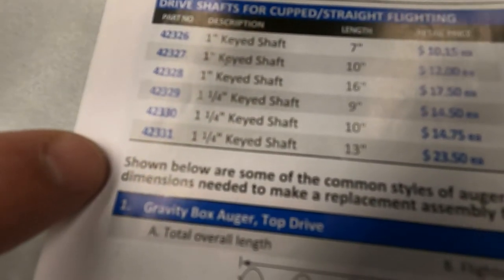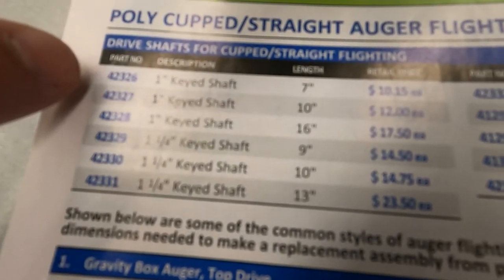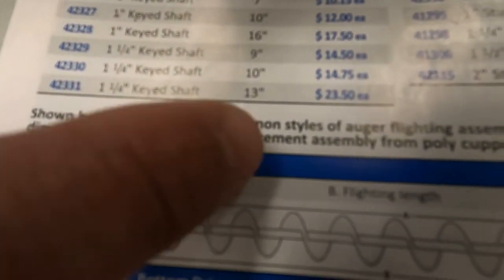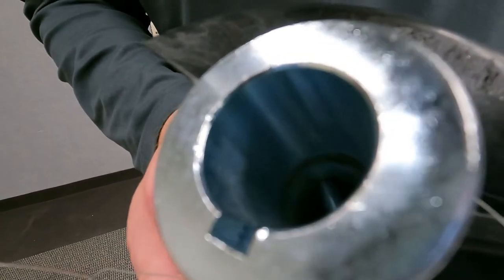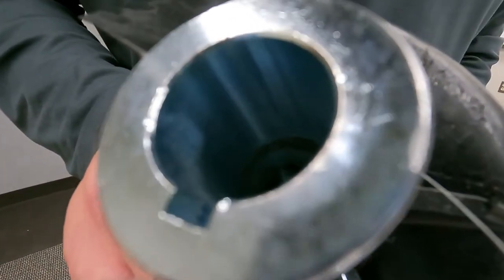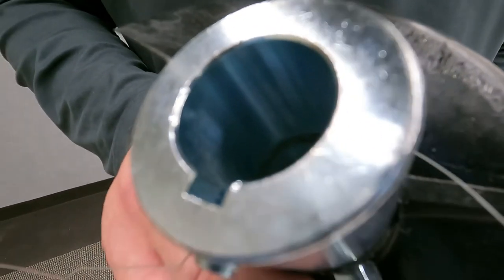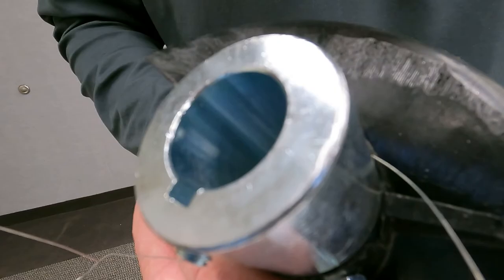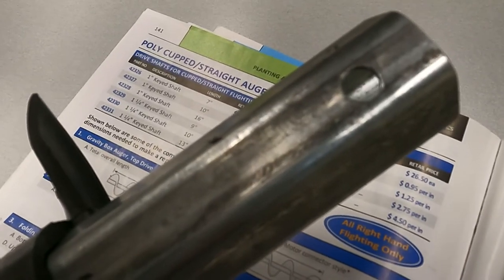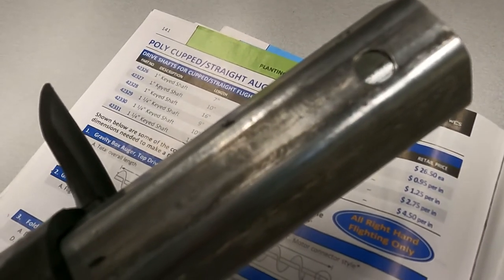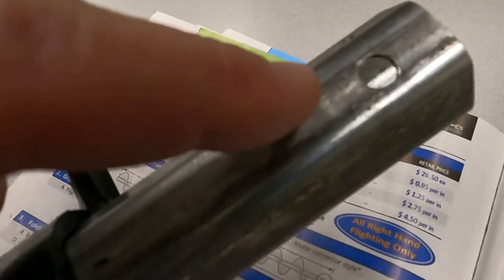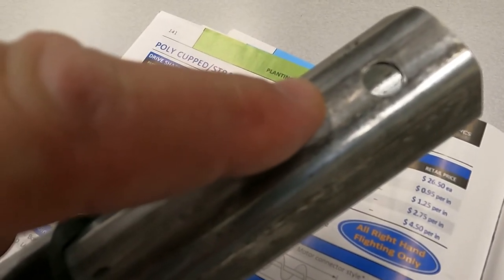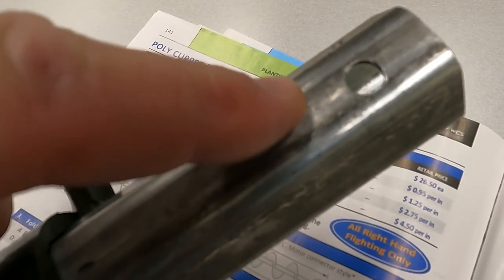Do you need a keyed shaft or do you need a shaft with a through hole in it? A keyed shaft will have a slotted cutout approximately an inch and a half in length at the end of the shaft to accept a keyway. A through hole shaft will generally have a three-eighths inch hole, three quarter to one inch on center from the end of the shaft.